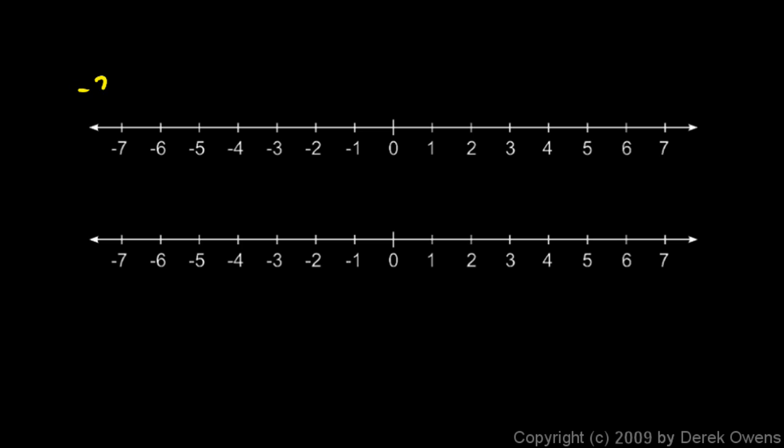The first one is negative 2 plus 5. What does that equal? Well, picture this as movement on the number line. We start at 0, and we remember that addition can be pictured as movement on the number line. So we start with a negative 2, that means we go 2 to the left, that puts us here at negative 2, and then the plus 5 means we go 5 to the right, so that puts us right here. We end up at positive 3. So 3 is the answer.